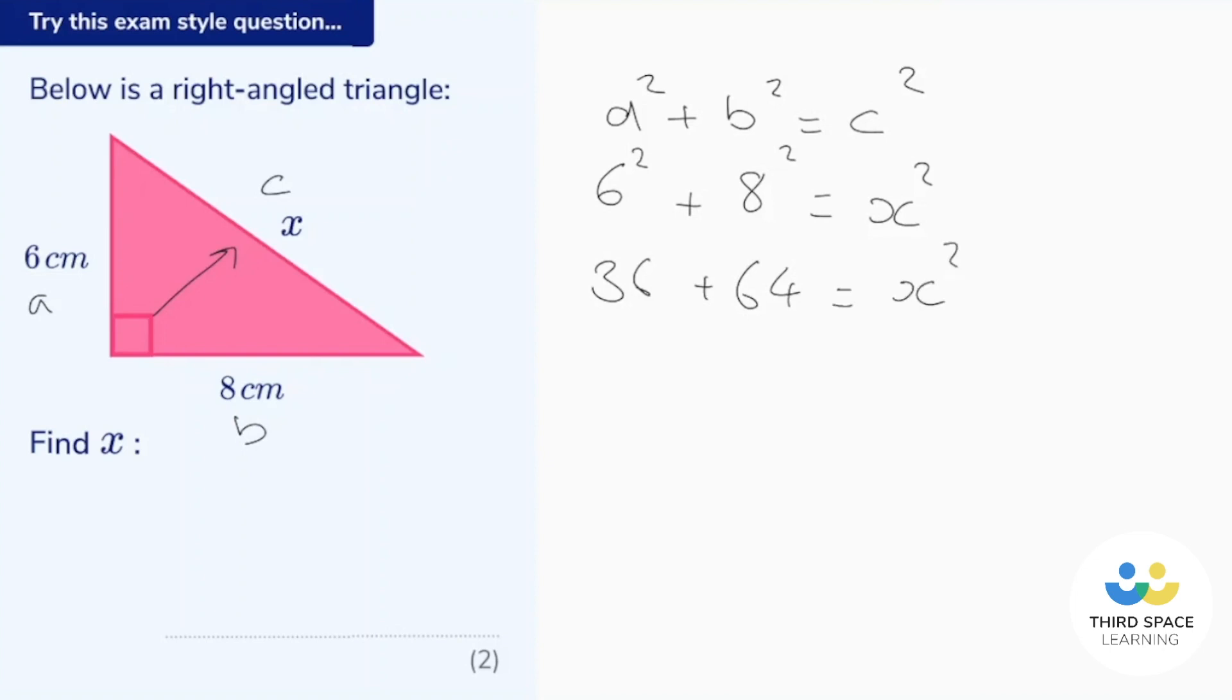36 plus 64 is 100. So 100 is x squared. Now all we have to do now is work out x. So to undo a square we need to take the square root. So x is equal to the square root of 100 and the square root of 100 is just 10. Now remember this was 10 centimeters long.